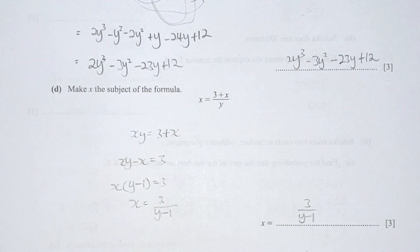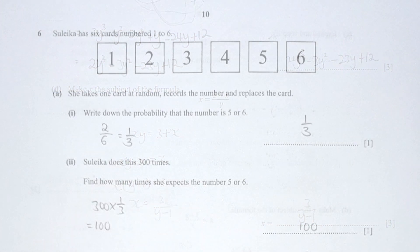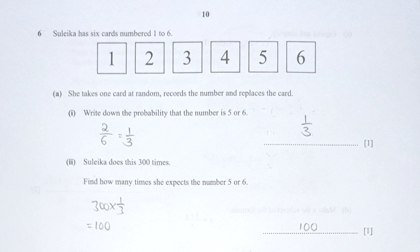For part d, making x the subject of the formula: I first take y multiplied by x, rearrange all x variables to the left-hand side, and extract them out. During this extraction, remember to leave (y − 1) in the bracket — if you don't include the minus 1, when you multiply x back it will cancel out the negative x. So x(y − 1) equals 3, giving x equals 3 over (y − 1).